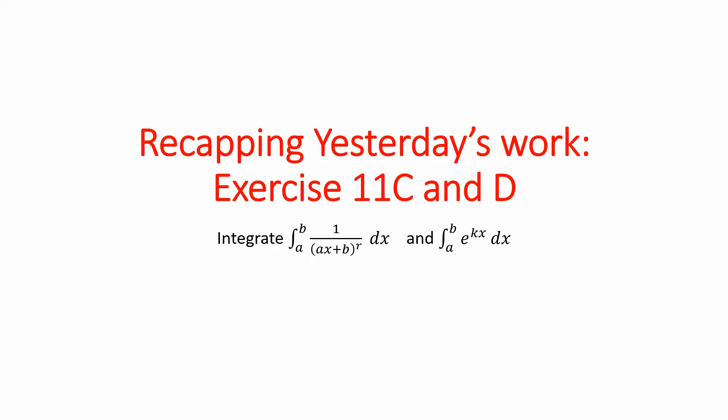Recapping yesterday's work, formulas. Let's work with two formulas. I want to test if you remember them because like I said, I'm predicting it to be on your exam one. So if I were to anti-diff ax plus b to the power of r where r is not equal to negative one dx, what is the formula for this one again?